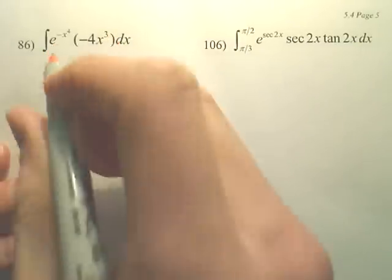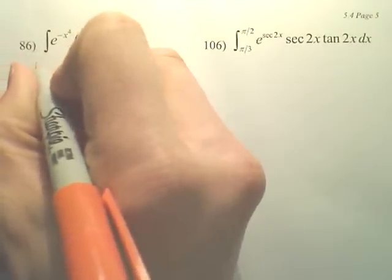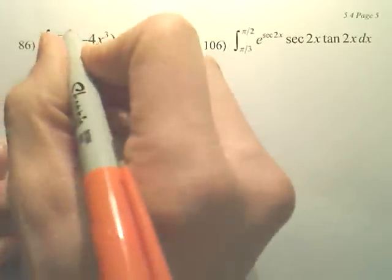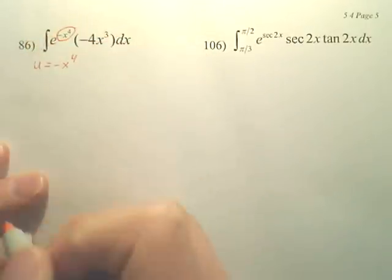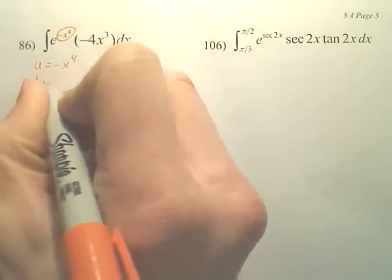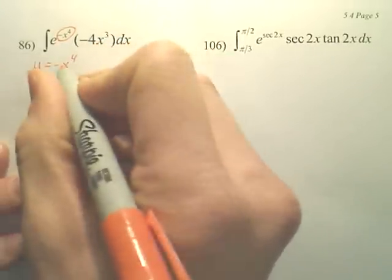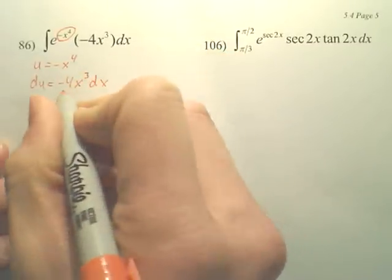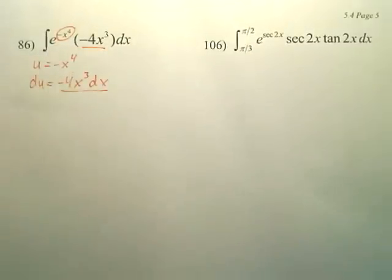If we're going to integrate this, you first need to find your u. And hopefully you realize that your u is right there, because when you derive that, you get negative 4x to the third dx, which this is right there.